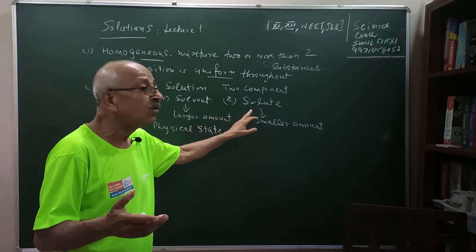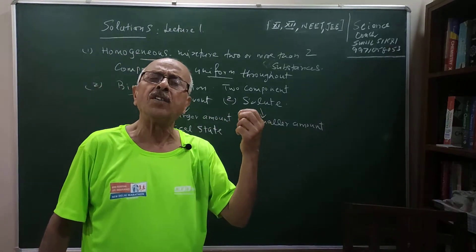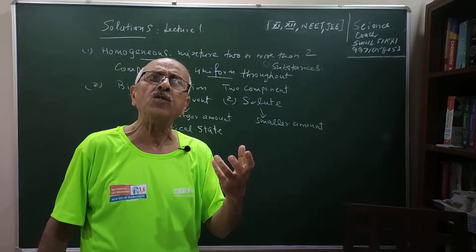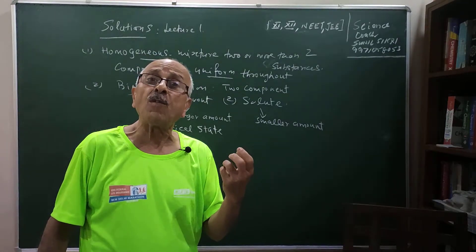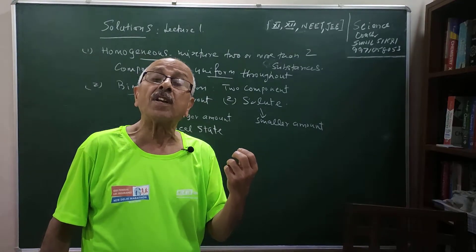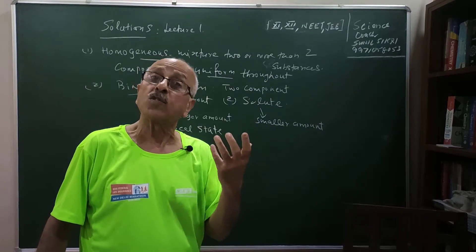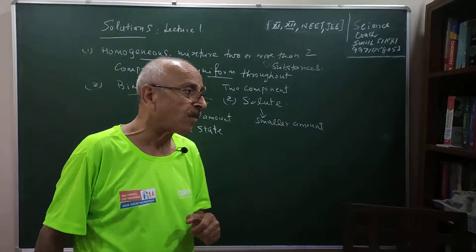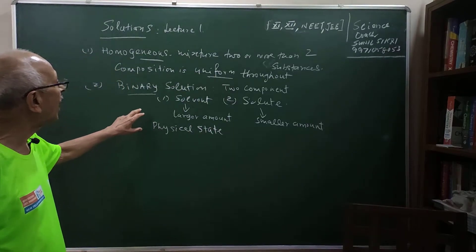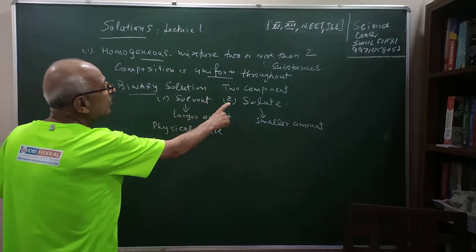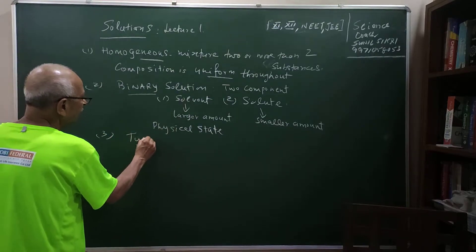We will be talking of solute and solvent. When I say a 10% solution of sugar in water, it means there are 10 grams of sugar dissolved in 100 grams of solution. We will look at these terms very soon. So there are solvent and solute — now let me talk about the types of solutions.